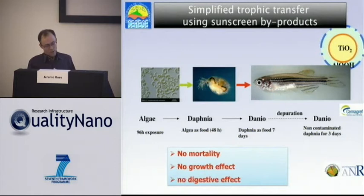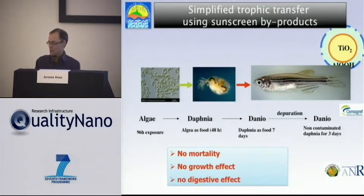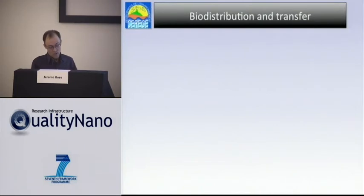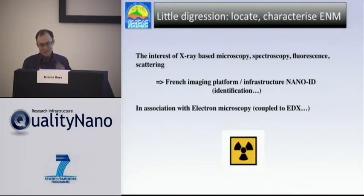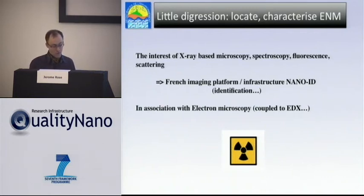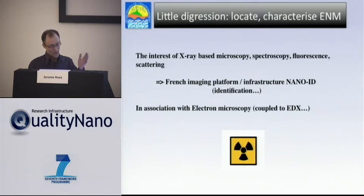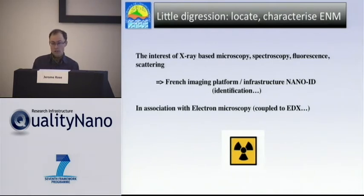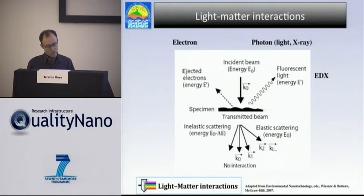The first question from my geology background was: are the Danio really in contact with nano? We need to look at the distribution of nano along this simplified trophic chain — the biodistribution and transfer from algae to Danio. I'd like to introduce a French platform called NanoIDEA — IDEA for identification — which is an X-ray based platform using mainly microscopy, spectroscopy, and scattering. I want to show you the interest in working with this kind of technology.